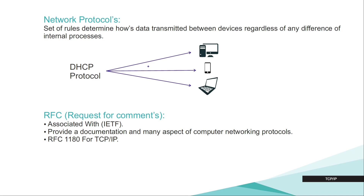An example of a protocol is DHCP. DHCP is a protocol that assigns an IP address to our devices. Most of the time when using a desktop, phone, or laptop connected to Wi-Fi, you don't have to enter any IP address — this is because our devices use the DHCP protocol, which assigns an IP address automatically. There is also something called RFC, or Request for Comments. RFC provides documentation for many aspects of computer protocols. For example, RFC 1180 — if you search for it, you will find more information about TCP/IP.